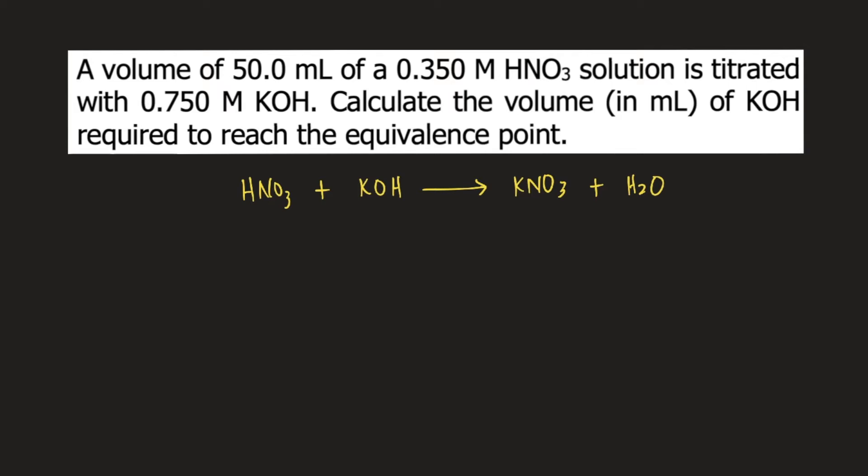We are given 50 mL of 0.350 molar HNO3. Let's start with 50 mL of HNO3. We need to convert mL to liters first.